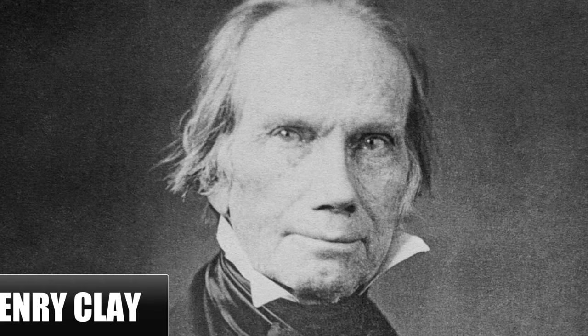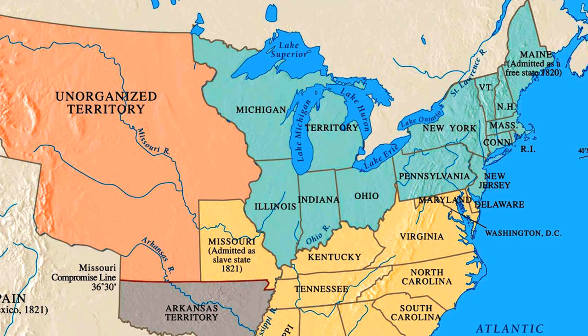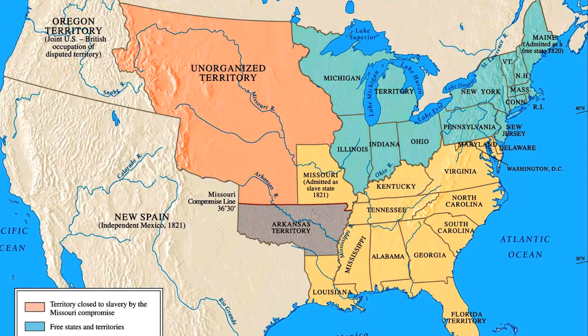Speaker of the House Henry Clay proposed a compromise to preserve a balance in Congress and satisfy both sides. His Missouri Compromise called for the admission of Missouri as a slave state while simultaneously admitting Maine as a free state. Admitting one slave state and one free state would maintain a balance of power in Congress.